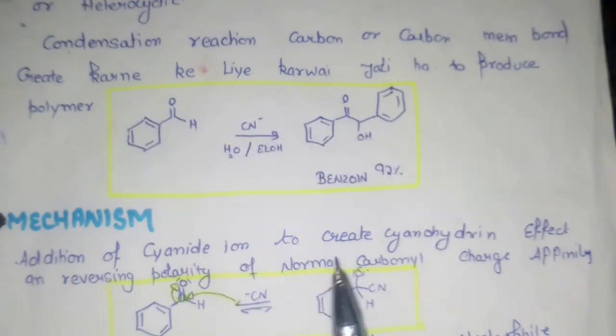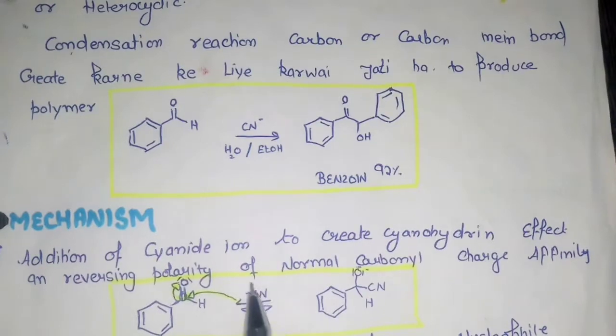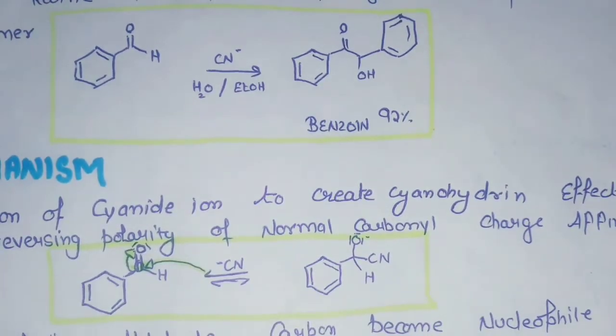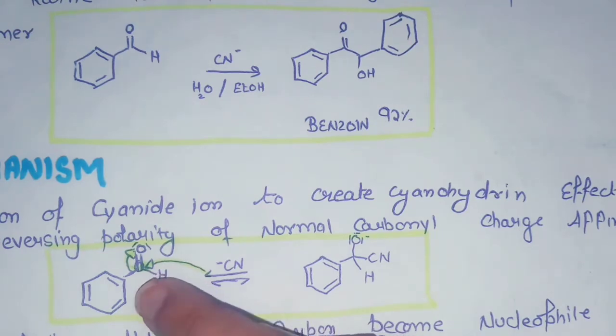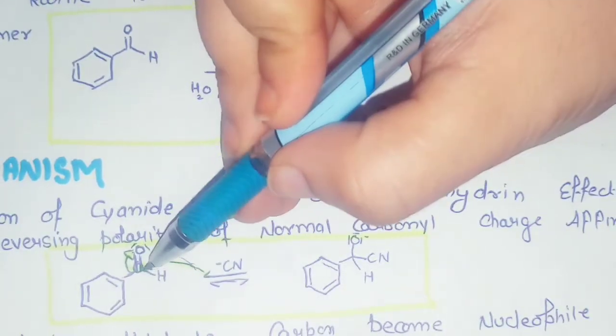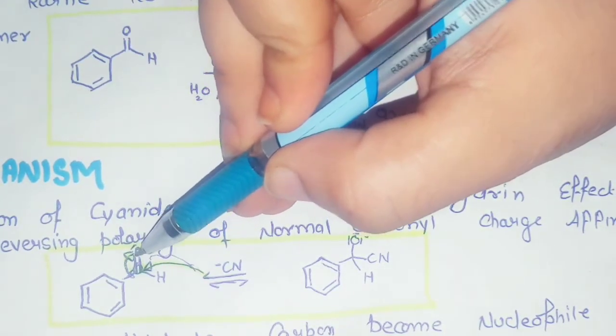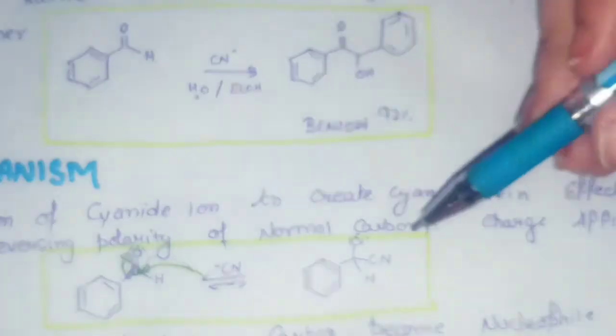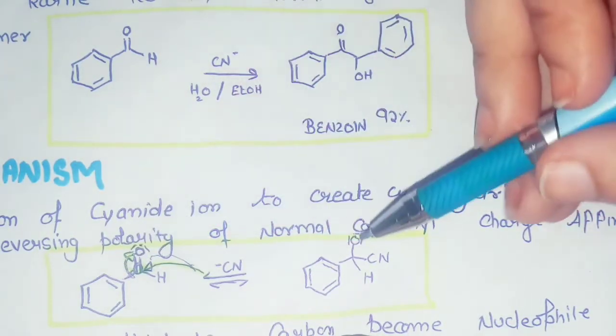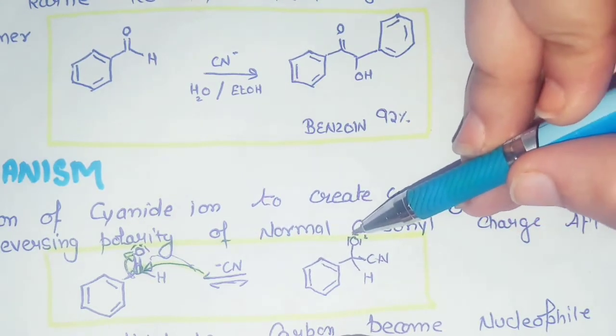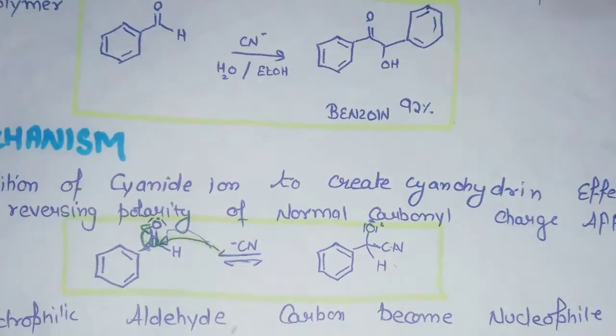The mechanism is completed in three steps. The first step is the cyanide ion creating a cyanohydrin effect, which reverses polarity. The cyanide will act as a donor. What happens is the bonds move from oxygen and cyanide attaches at the carbon position, forming a new bond structure with cyanide attached.